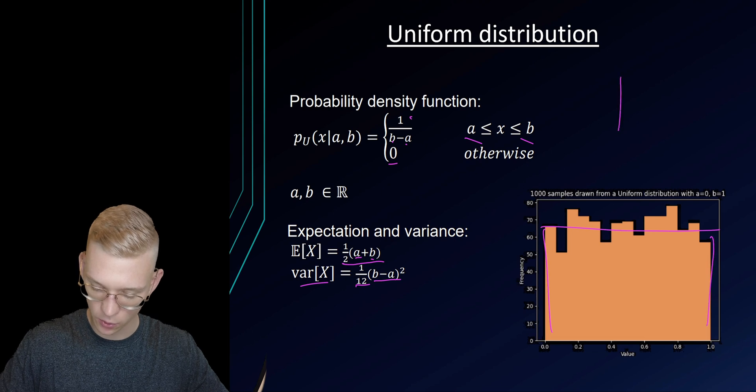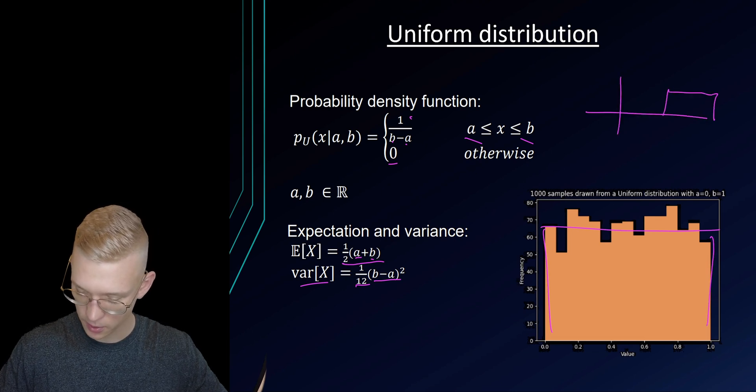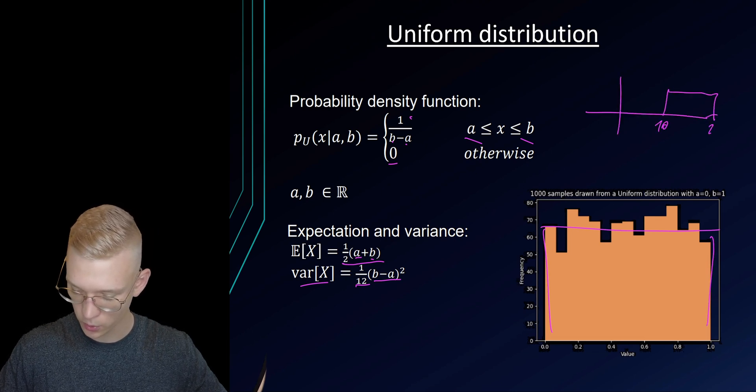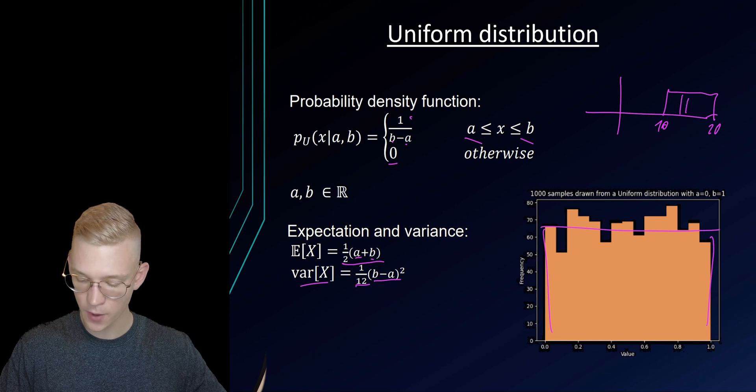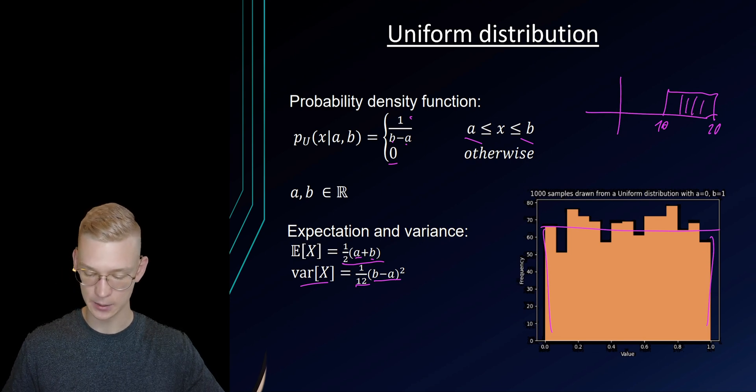So if you look at a graph, for example that is right here from 10 to 20, you say that every value is equally likely.